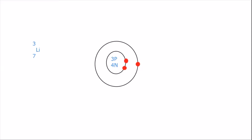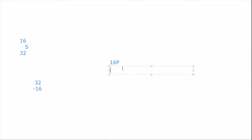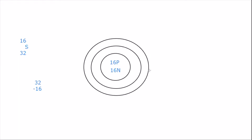Now we are going to look at sulfur. Sulfur has an atomic number of 16 and an atomic mass of 32. So because its atomic number is 16, that means it has 16 protons, and its atomic mass is 32. So 32 minus 16, we can see that it also has 16 neutrons. Sulfur is in period three, and this means that it has three shells. So we know that sulfur has 16 protons, and as an atom, sulfur has 16 electrons as well.